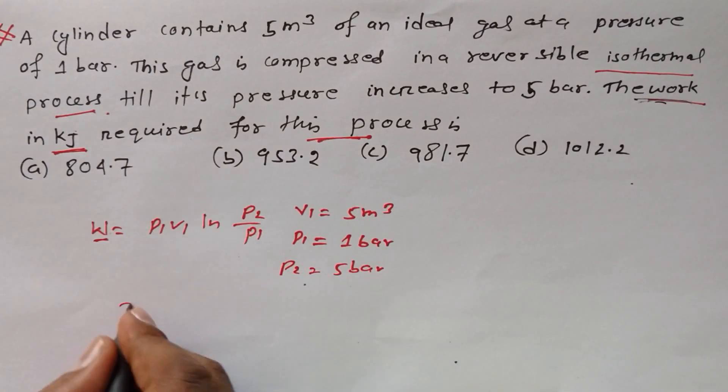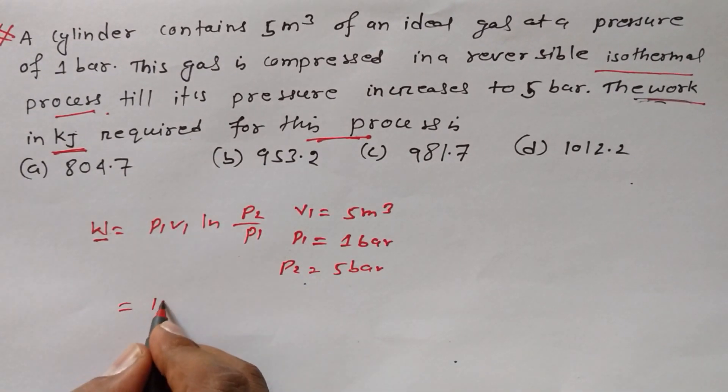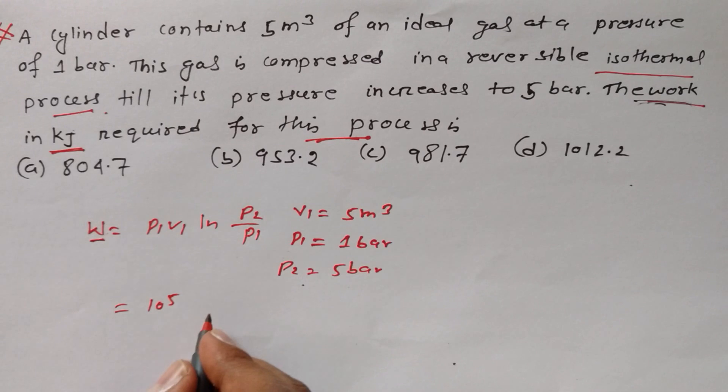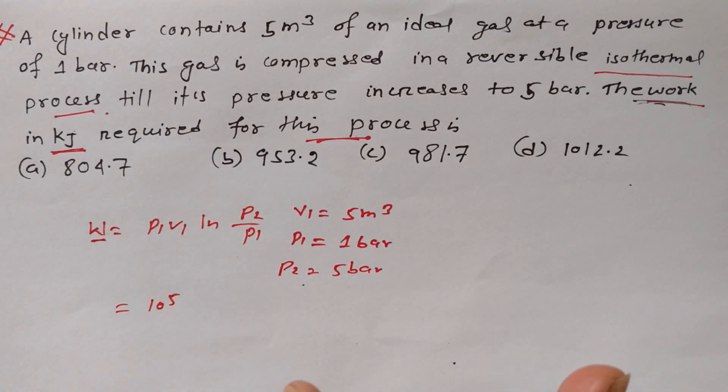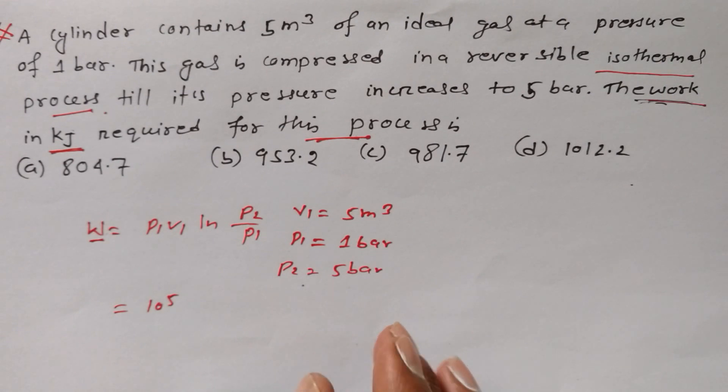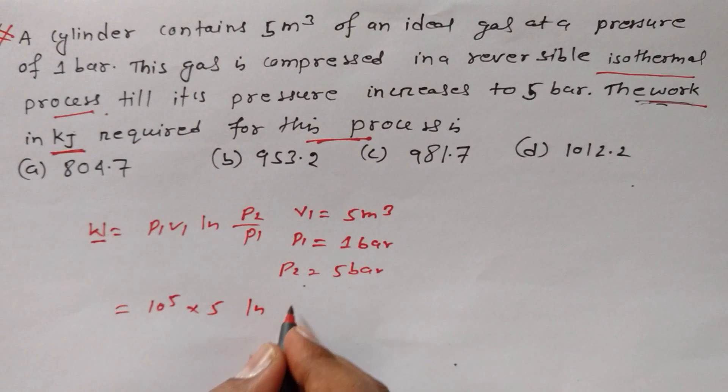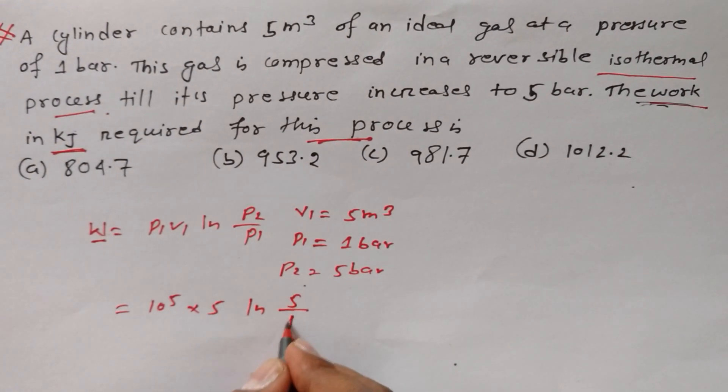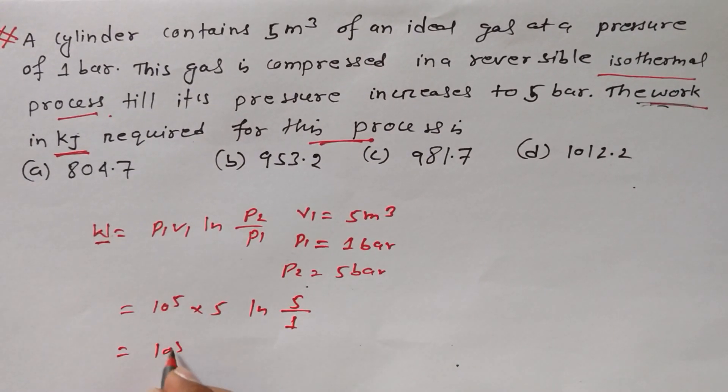Here unit also matters. So now P1 is equal to how much? 1 bar, 10 to the power 5 pascal. Pascal means newton per meter square, that means this is in SI unit. So P1 is equal to this much. V1 is equal to 5 meter cube, natural log 5 bar by 1 bar.